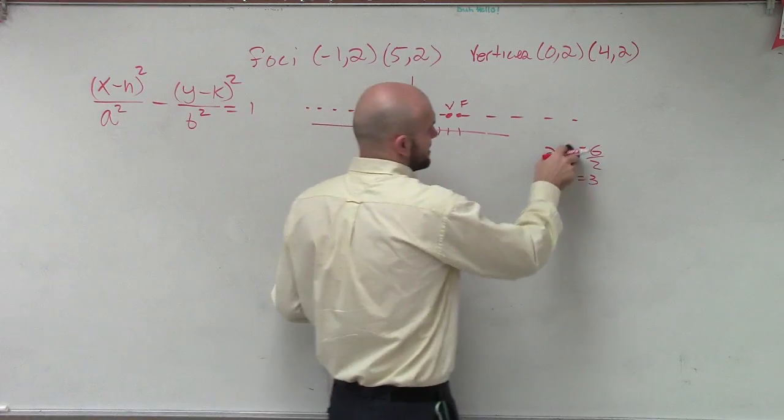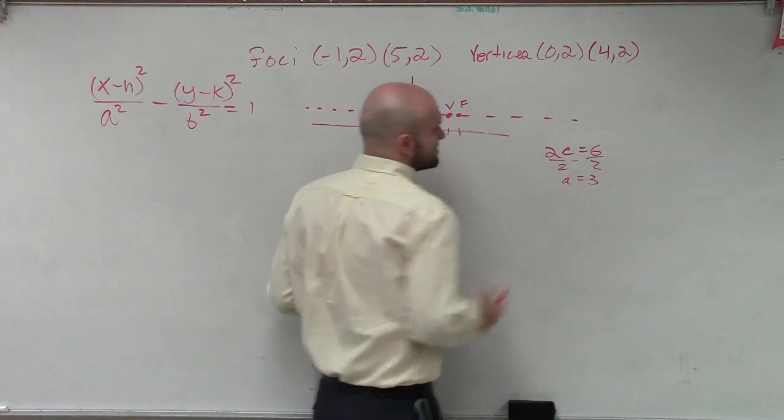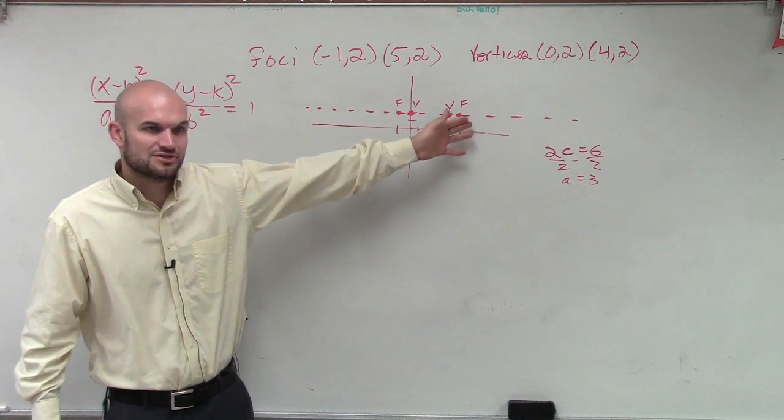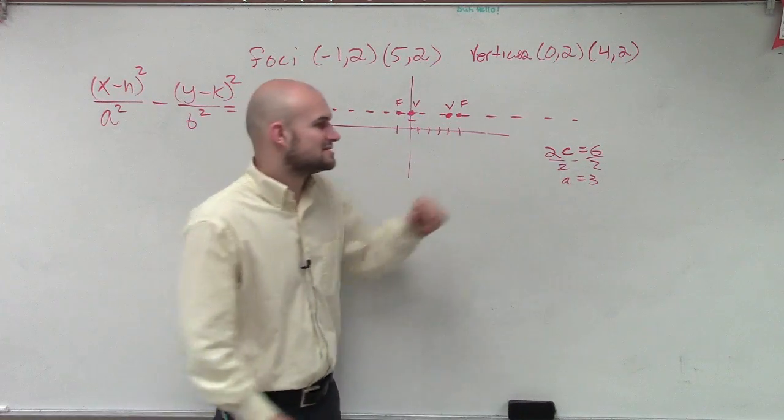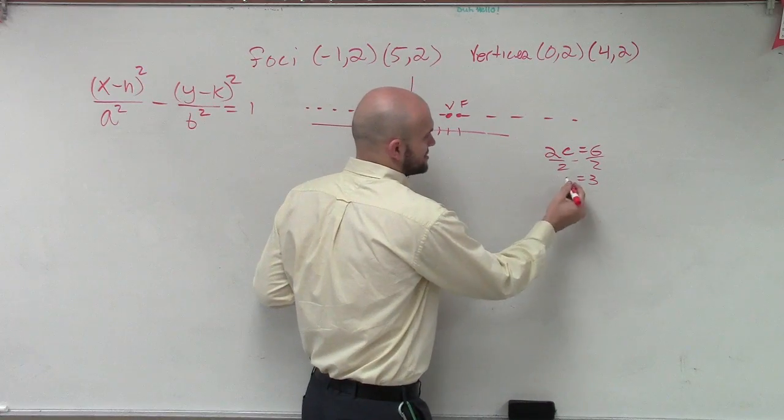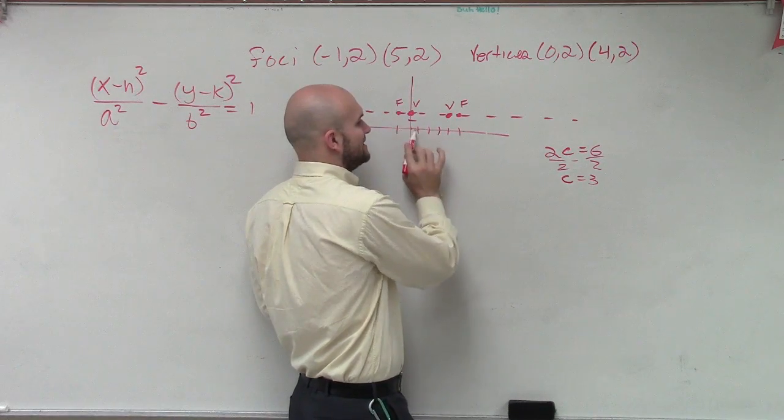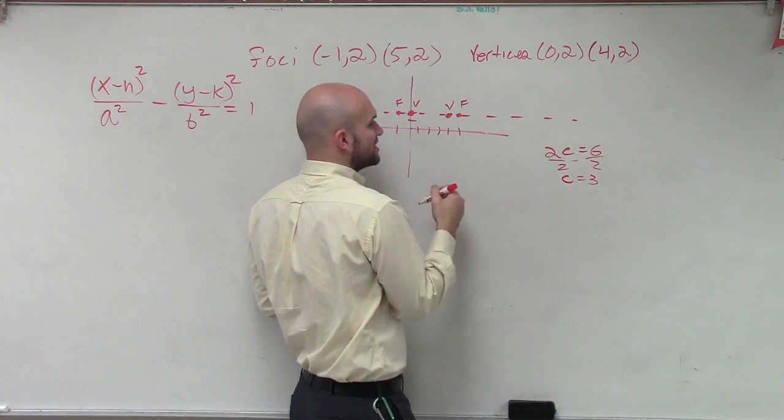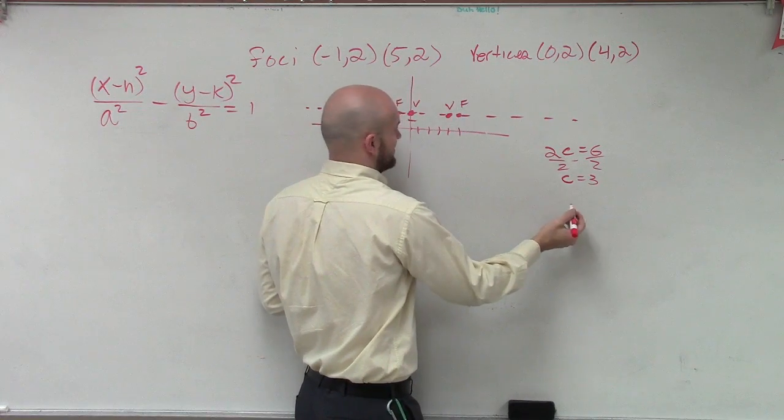What are you doing? I was doing my foci. I'm so good for you. That's because I was doing 2c. The distance between your two foci was 2c, which is c equals 3. My apologies. If I do a, the distance between my two vertices, which is 0, 2, and 4, 0, was 4. Thank you.